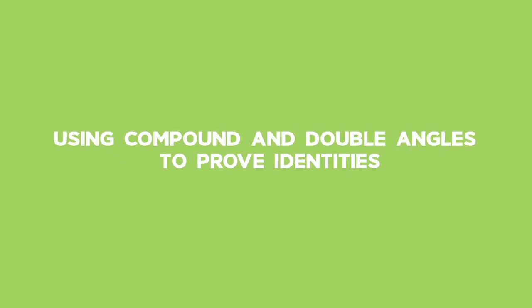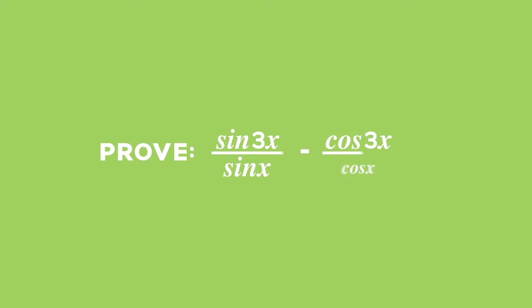Example 1: Using compound and double angles to prove identities. In this example, you are required to prove that sin 3x over sin x minus cos 3x over cos x is equal to 2. Since there is more we can do with the left-hand side of the equation, we start working with it first.